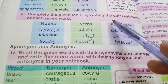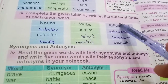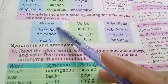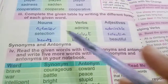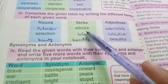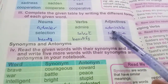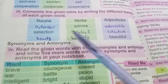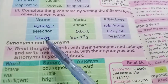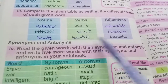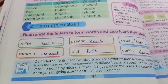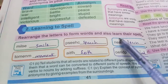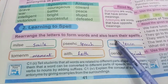Complete the given table by writing the different forms of each given word. Noun — Verb — Adjective: admirers — admire — admirable; selection — select — selective; beauty — beautify — beautiful. Rearrange the letters to form words and also learn their spelling.